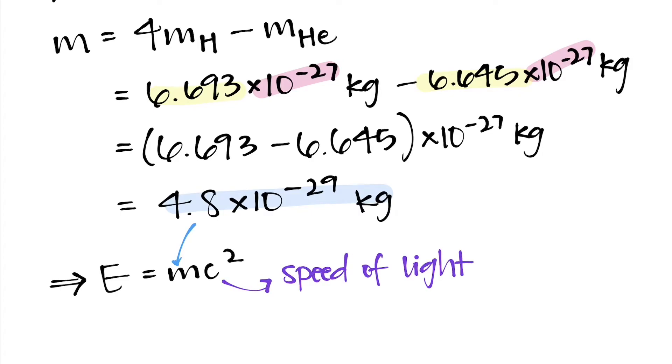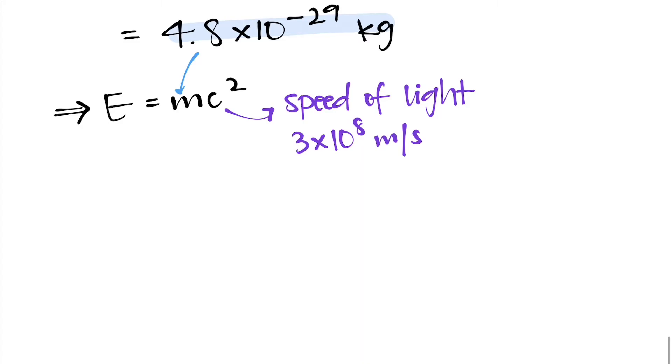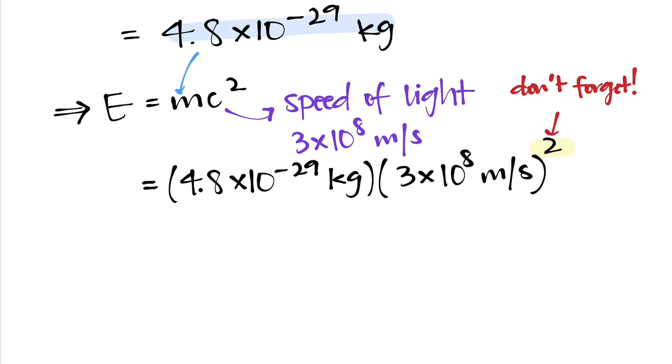But that's the number we plug in for M in E equals MC squared. And we use the speed of light for C since that's what it is. So plugging in our values, we have 4.8 times 10 to the power of negative 29 kilograms times the speed of light squared—don't forget to square it—